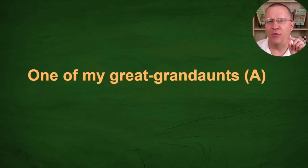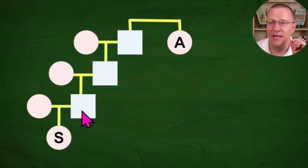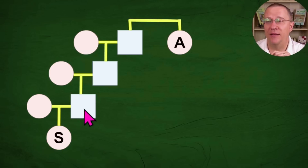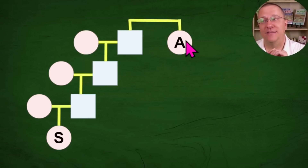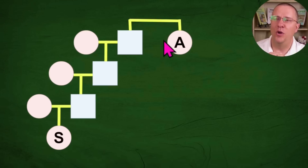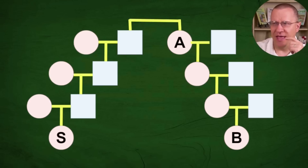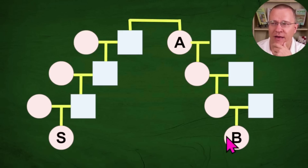First off, one of my great grand aunts who we're going to label A. Let's draw out this relationship. You can see that we have Cosmic Slice down here, and this is through her father — through his father, through his father's sister — that would be a great grand aunt. Based on what she said, a great grand aunt would be in this location right up here, and so I've labeled her A. This great grand aunt has a great granddaughter B that she's been in contact with. So we have Cosmic Slice to her great grand aunt who has a great granddaughter B.